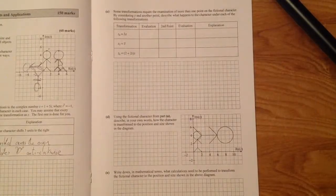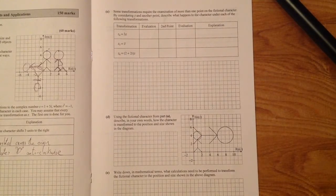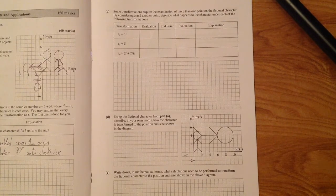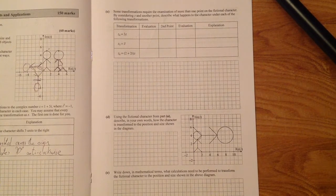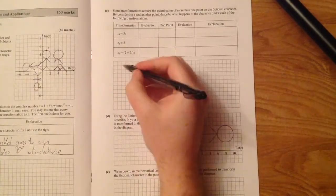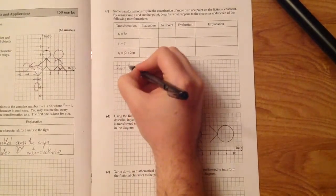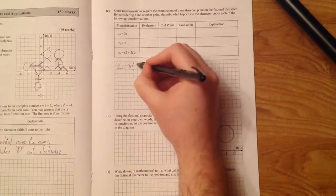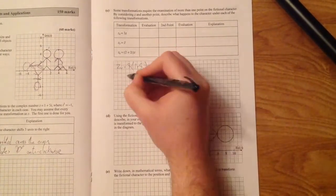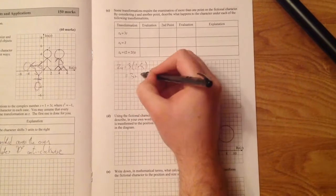So the next part says some transformations require the examination of more than one point on the fictional character. By considering z and another point, describe what happens to the character under each of the following transformations. So it says z4 equals 3z. So z4 equals 3 multiplied by z, which is 1 plus 5i. Which is going to equal 3 plus 15i.